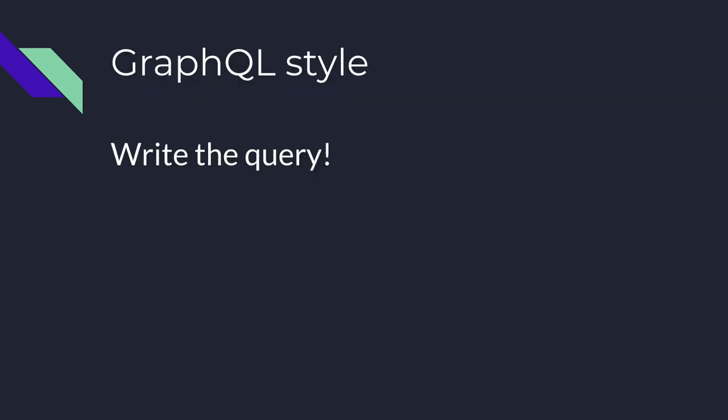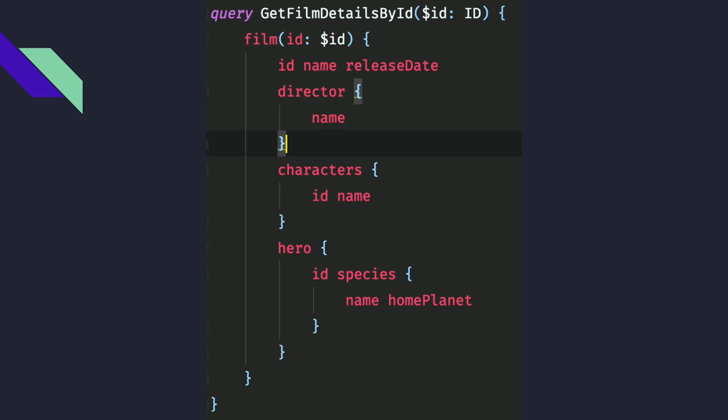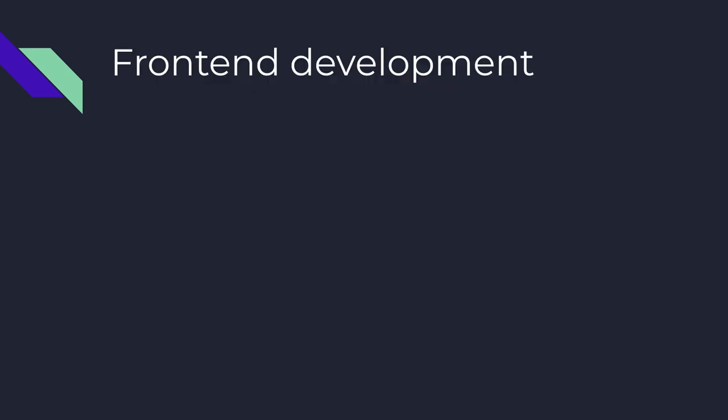Then you write the query. This is an interesting part — it's a single query in itself, and you can specify each and every field you want: the name and release date of the film, the name of the director, name of the characters, and some extra information of the hero. I don't have to worry about the API calls now. GraphQL has introduced declarative implementation and strict typing, and some of these features have a direct impact while others have a side effect.